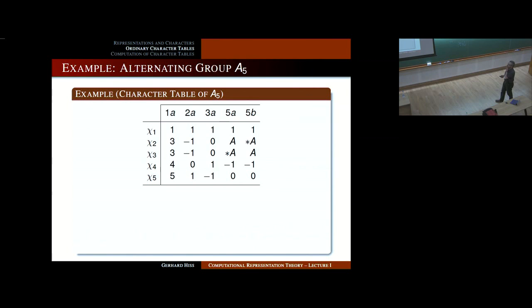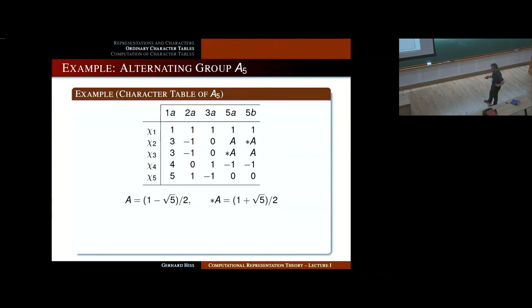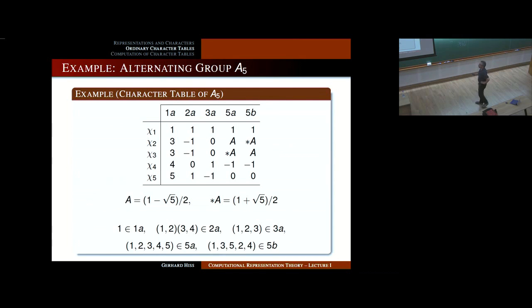Here is an example: the alternating group A5. This is the character table. There are two entries which are complex numbers — A and star A. On the top row there are names for the conjugacy classes: the first letter indicates the order of the elements, and a second letter distinguishes elements of the same order. This is the atlas notation. Here I have written representatives for these conjugacy classes.